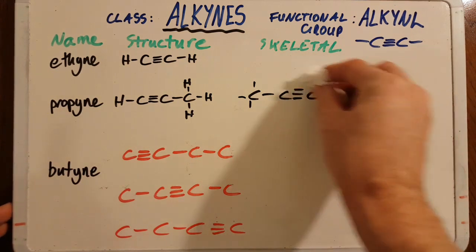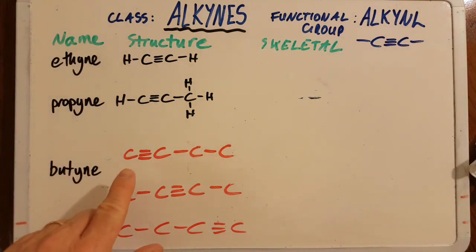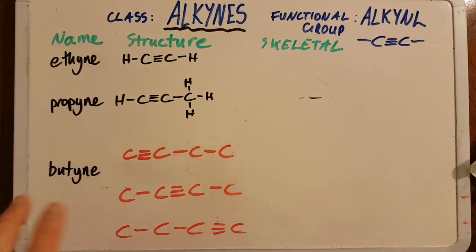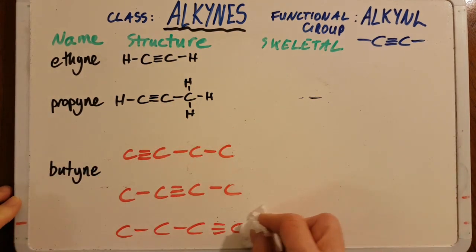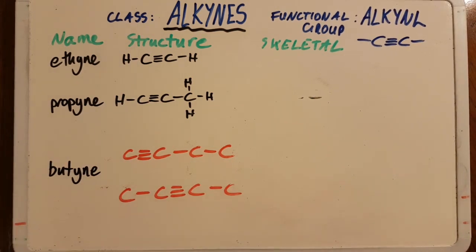Four carbons implies butyne as the functional group. This would be 1-butyne, this would be 2-butyne, and this would be 3-butyne. But no, that one's a repetition. The first and the third are just rotations of each other. So since I want to get the lowest number in my name, I'm going to erase that.